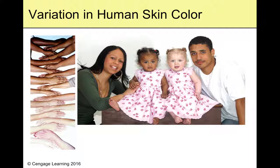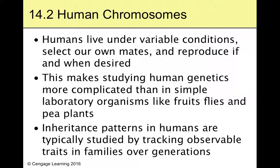It's continuously variable, just like so many other traits. Humans live under variable conditions, select their own mates, and reproduce if and when desired — which makes studying genetics very difficult. We're not like fruit flies; you can't just pick a mate, have a hundred offspring, and figure out their genetics. Humans take a long time to reproduce and choose their own mates, so it gets really tough to study human genetics compared to lab animals.